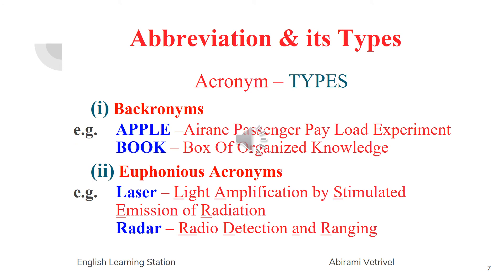There are different types of acronyms and let us learn one by one. The first is Bacronym. Bacronyms are acronyms which are constructed from already existing words in the dictionary. For example, the acronym for A Rain Passenger Payload Experiment is APPLE, and the acronym for Box of Organized Knowledge is BOOK. Since APPLE and BOOK are words already existing in the English language, these two acronyms are called Bacronyms.